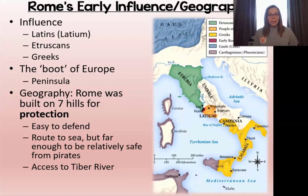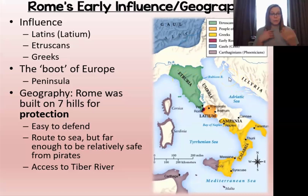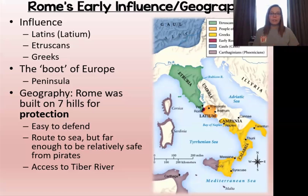Rome is located in the country of Italy. Italy is part of Europe and on your map it looks like a giant boot — a lot of people call it the boot of Europe. It looks like a heeled woman's boot and it is a peninsula, meaning it is surrounded by water on three sides. That means it is open to a lot of resources and it's also a great place to do trade with other civilizations — you can ship things in and out easily.